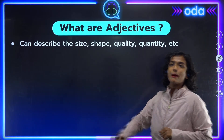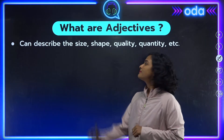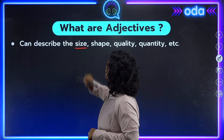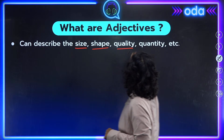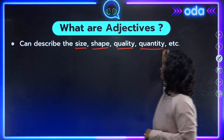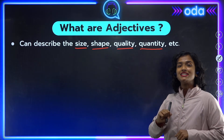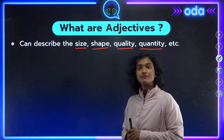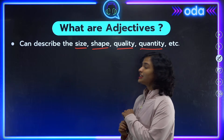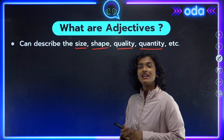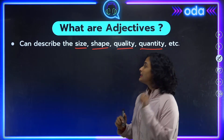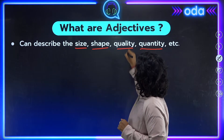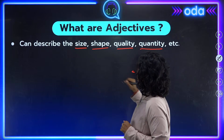Adjectives can tell us the size, shape, quality, or quantity — and even more things about our nouns. In our earlier example, 'red' and 'beautiful' both tell us about the quality of the dress that was bought.